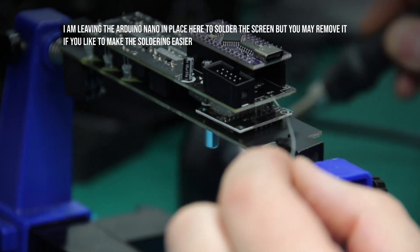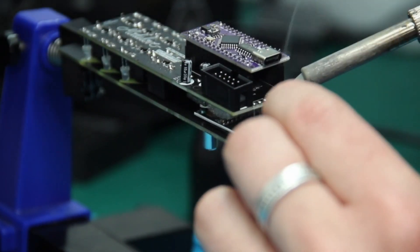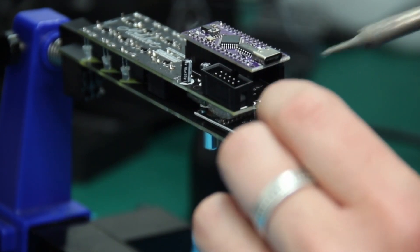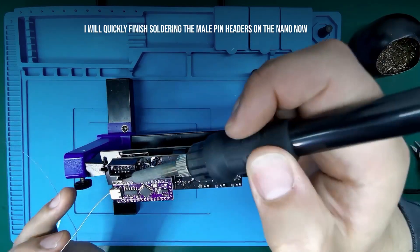I am leaving the Arduino Nano in place here to solder the four pins, but you may also remove it if it's easier. I will now finish soldering the male pin headers on the Arduino Nano.